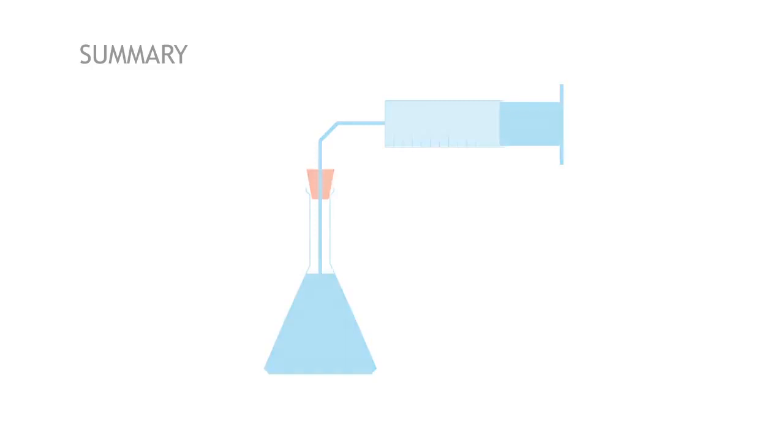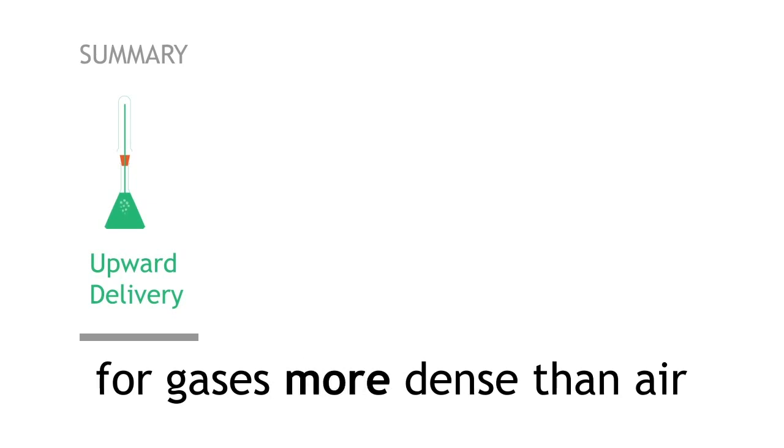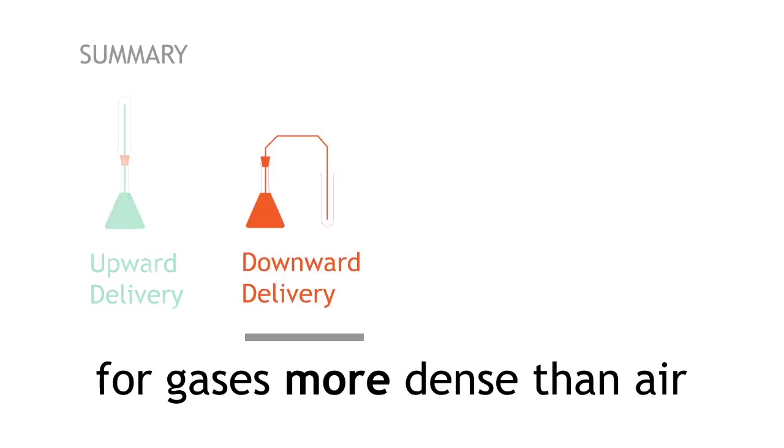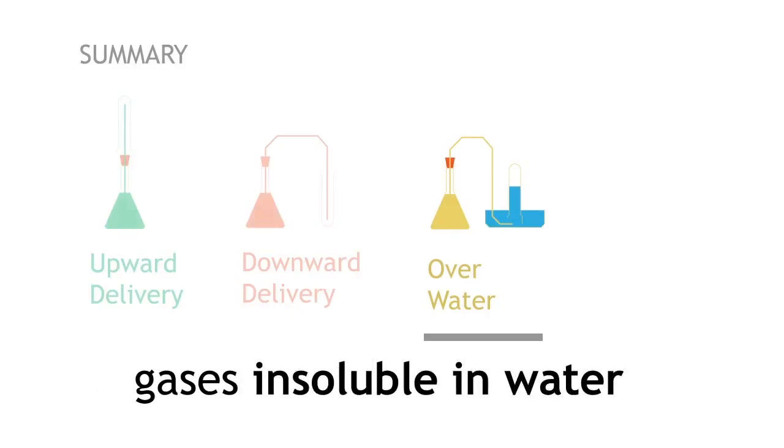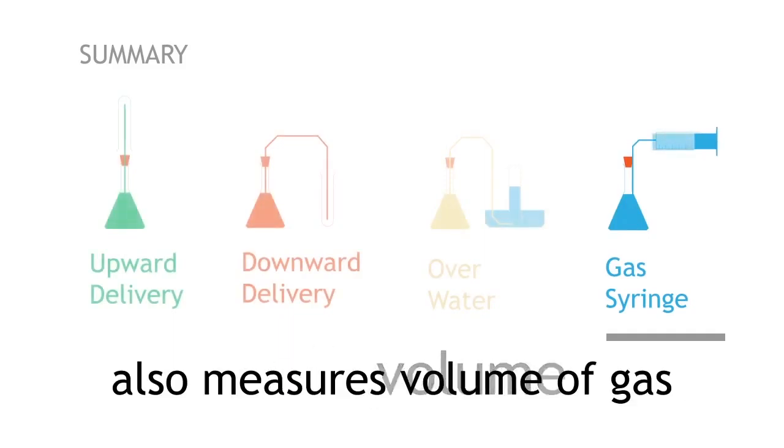In summary, for gases less dense than air, they are collected via upward delivery. If a gas is more dense than air, we collect it via downward delivery. These gases can also be collected over water, but this method only works for gases which are insoluble in water. And finally, we can use a gas syringe to collect all gases, and is useful for measuring the volume of a gas.